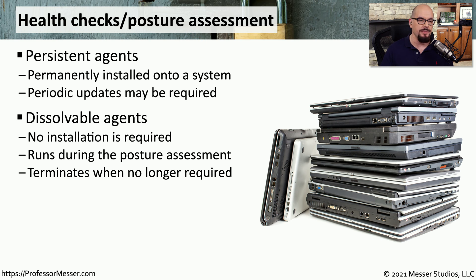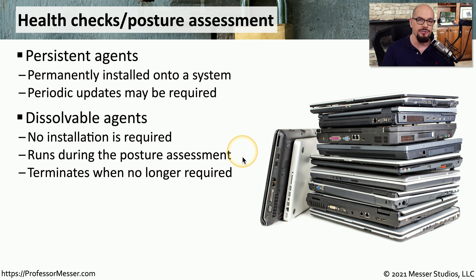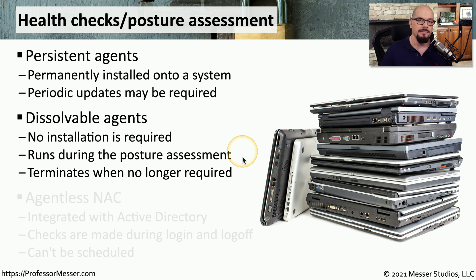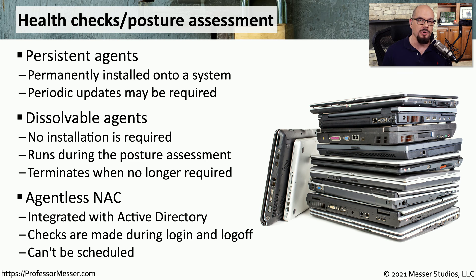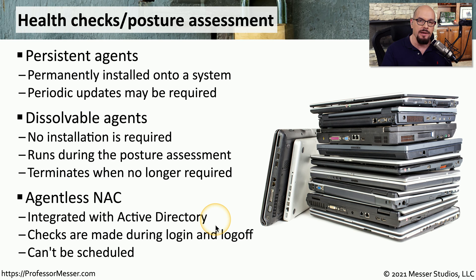An option that doesn't require this much management overhead might be a dissolvable agent, which means we're not installing a permanent piece of software. When we connect to the network, this software will run on that local device and perform the posture assessment. When that assessment is done, the software terminates and is no longer located on that machine. Some operating systems include network access control as part of the operating system itself, and no additional agent is required. In the case of Windows, for example, an agentless NAC is integrated with Active Directory and performs these checks when the system logs into and out of the network. This also means you're not able to schedule any of these health checks, so if you need additional functionality, you may require a persistent or dissolvable agent.